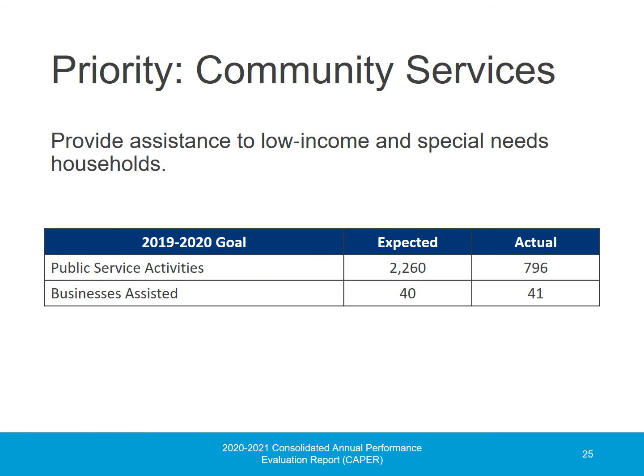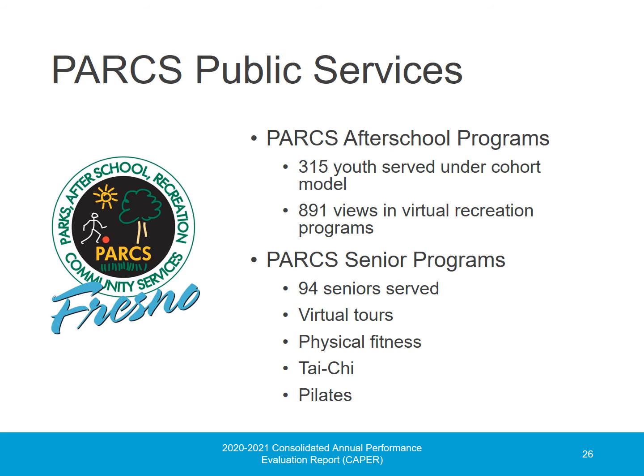The fourth goal was to provide assistance to low-income and special needs households through community services activities. For this goal, 2,300 persons were expected to benefit and 837 persons actually benefited during the program year. COVID-19 had an adverse effect on the after-school programs offered at neighborhood centers. Under CDC guidelines and city protocols, the Parks Department had to adopt a cohort model program and adhere to strict social distancing, mask mandates, sanitizing, and outdoor-only protocols. Parks saw a reduced number of participants, but served 315 unique individuals in the cohort model. Effective July 6, 2021, Parks shifted back to a drop-in model and attendance numbers started to increase.